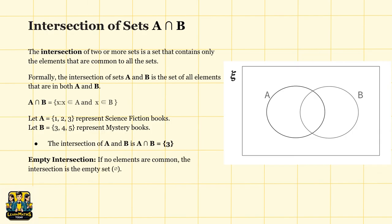For example, let's consider two sets where A, representing the science fiction books, contains the set 1, 2, and 3, and B, contains the set 3, 4, and 5, representing mystery books. The intersection of these two sets, A intersect B, will include only the books that appear in both categories. In this case, the common element is 3. So A intersect B gives you a set of only one element, 3.